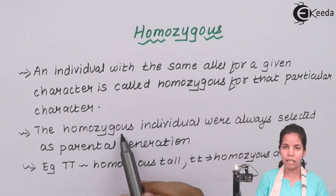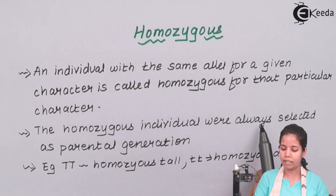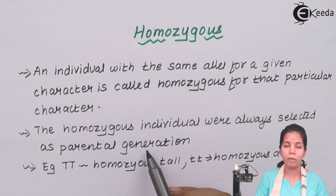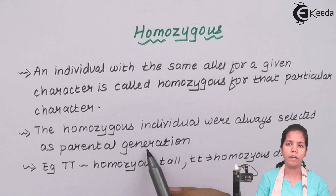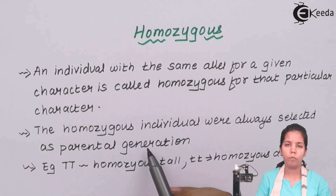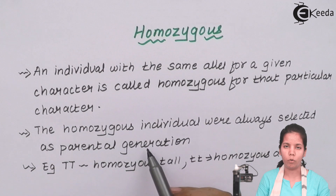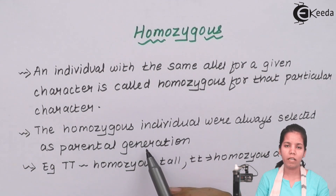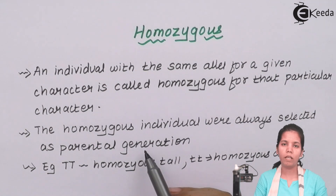Homozygous individuals are always selected as the parental generation because Mendel always tried to cross pure breeds. When I say pure breeds, I mean capital T versus small t, small t. These are pure breeds, used to obtain the F1 progeny in a normal parameter and to see the variations later on.